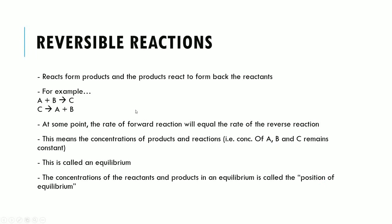Let's take a look at the concept of reversible reactions. This is when reactants form products and the products actually react to form back the reactants. For example, A + B gives C, but C decomposes back to give A and B, represented with a double-headed arrow. At some point in a reversible reaction, the rate of the forward reaction will equal exactly the rate of the reverse reaction. This means C is being formed at the same rate as A and B, so the concentrations of all three — reactants and products — remain constant. When this happens, it's called an equilibrium.